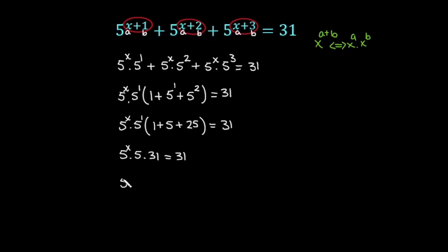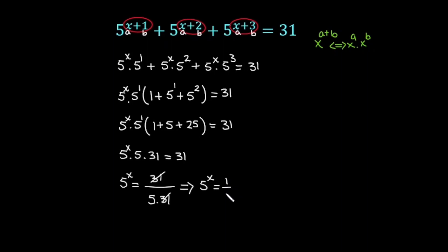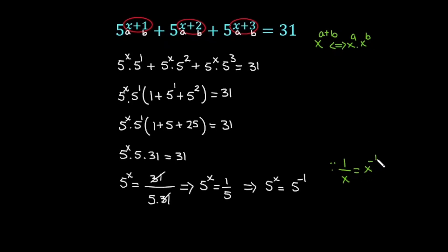In the next step, 5 raised to the power x is equal to 31 over 5 times 31. The 31 cancels with 31, so this simplifies to 5 raised to the power x equals 1 over 5, which can further be written as 5 raised to the power x equals 5 raised to the power minus 1, because 1 over 5 equals 5 to the minus 1.